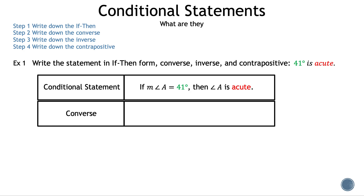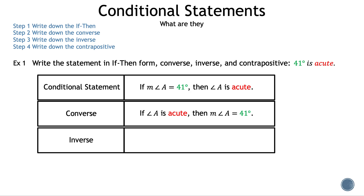Next, let's find the converse. Remember, the hypothesis and conclusion switch. The converse statement is: if angle A is acute, then the measure of angle A is 41 degrees. Next, let's find the inverse. Remember, the hypothesis and conclusion remain, but we negate them. The inverse statement is: if the measure of angle A is not equal to 41 degrees, then angle A is not acute.